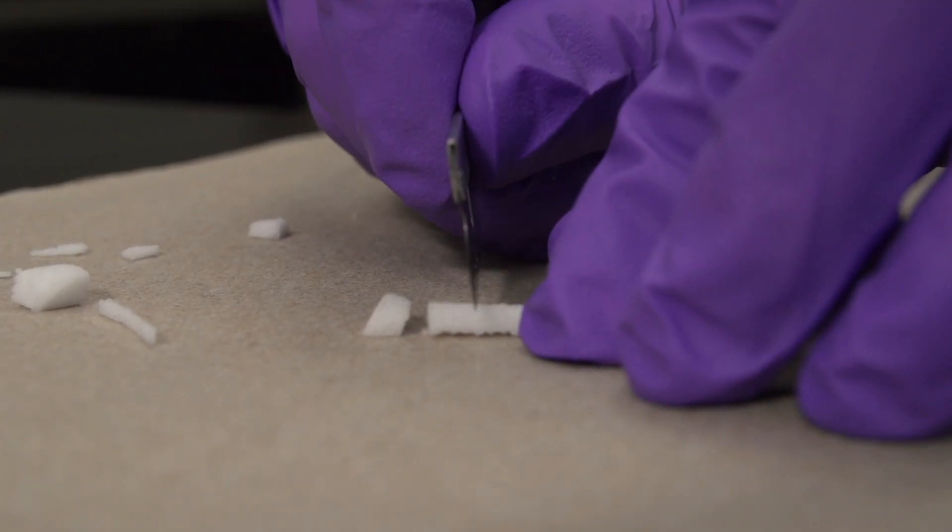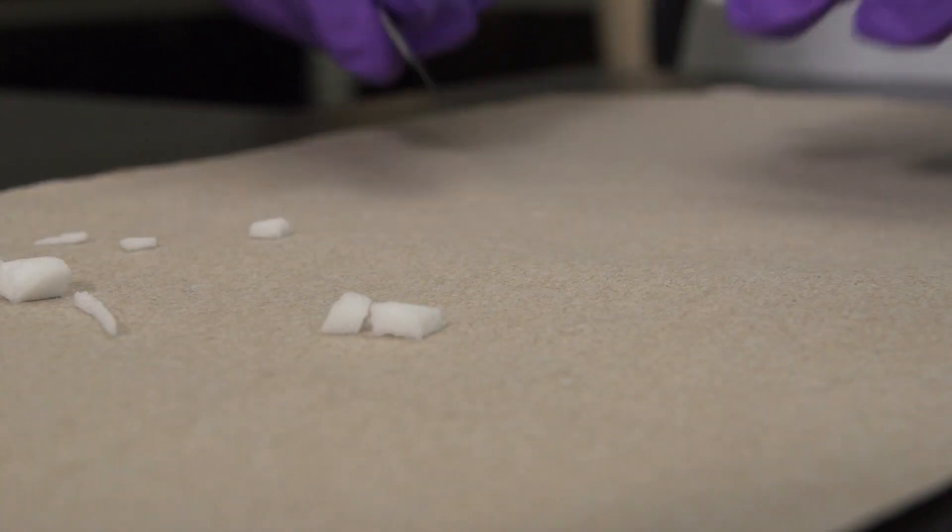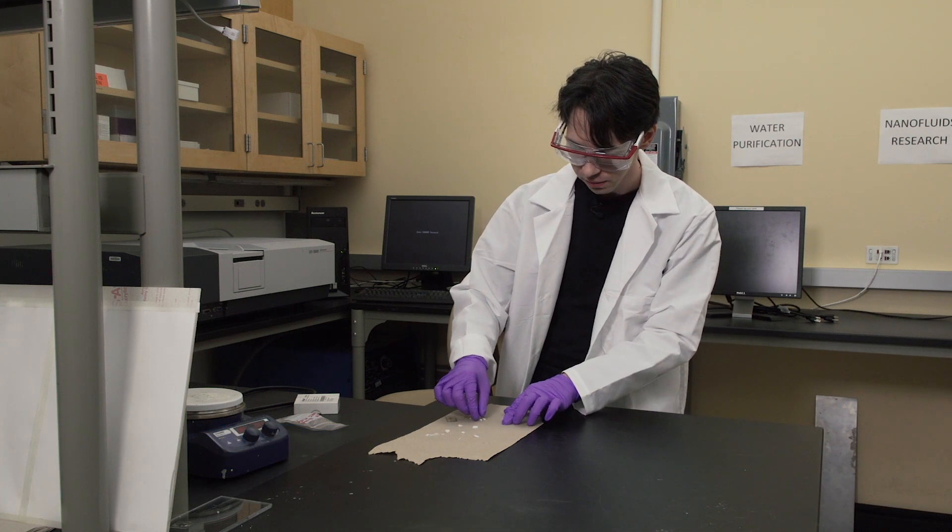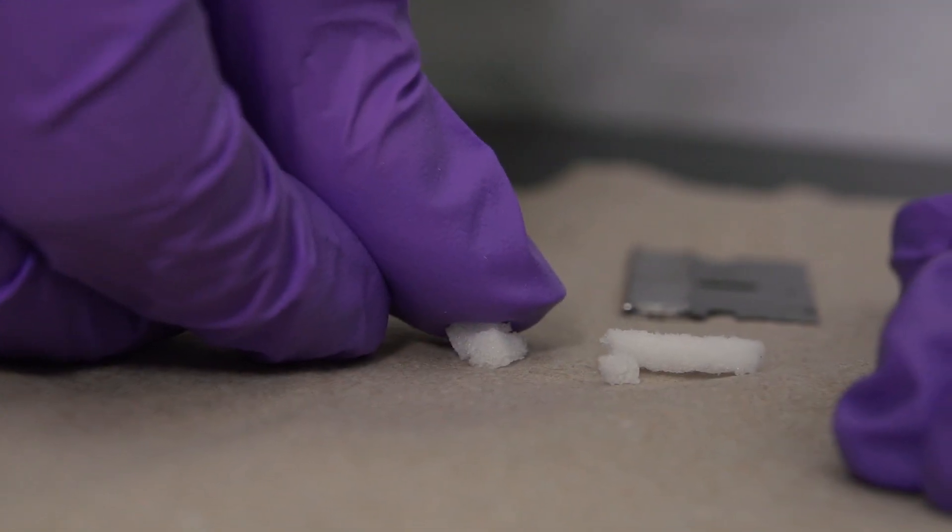See we have one piece here, we cut again. Now we have two pieces and what's interesting about this material is that because of the way it's structured with all the spheres and the liquid phase we can actually have these two pieces become one just by pressing.